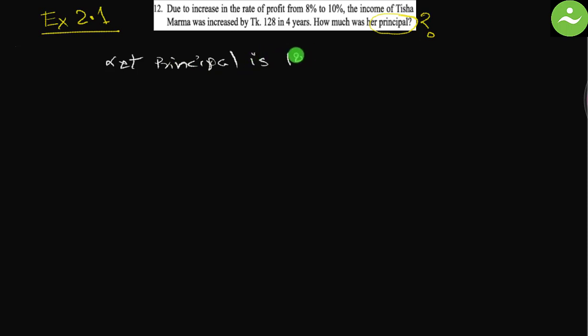Let principal is 100 taka. Let us find out how much income increase in four years. At 8% rate, when profit is 8%, income is 8 taka.